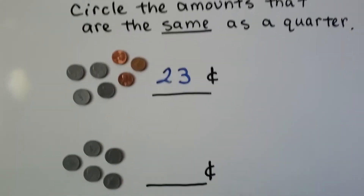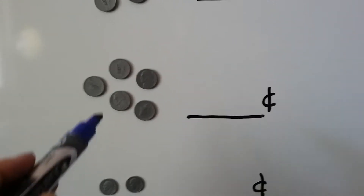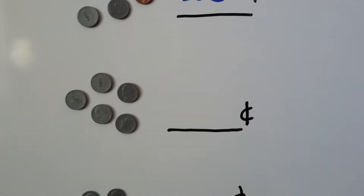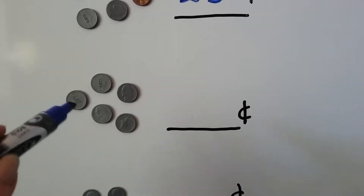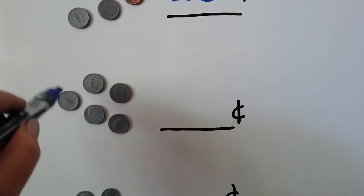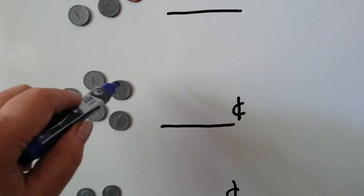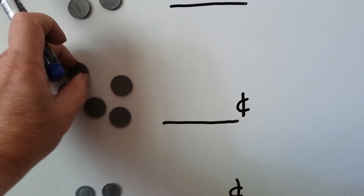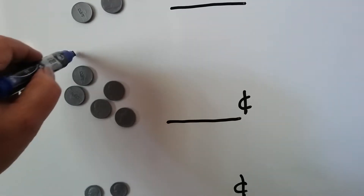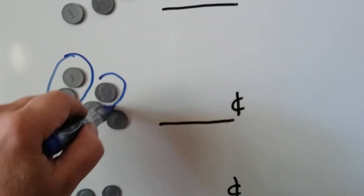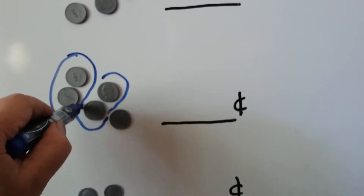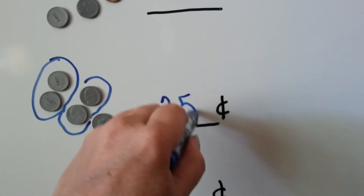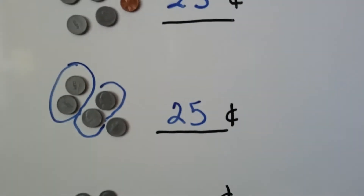How about here? We have five nickels. Can you count by fives? We can say 5, 10, 15, 20, 25. Or we can put them into groups of 10 — that's a 10, and that's a 10, so that's 20, and 5 more is 25. That's 25 cents.